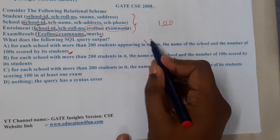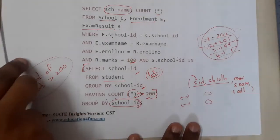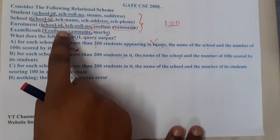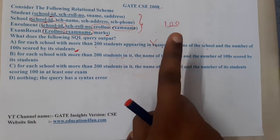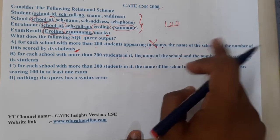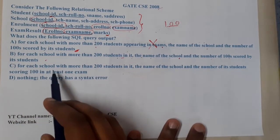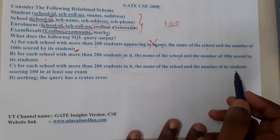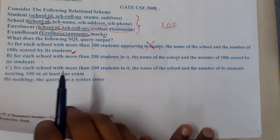Option A is wrong because in the inner query we are counting students from the student table, not from the exam or enrollment table, so we are not filtering by those appearing in an exam. Option B could be the correct answer. Option C says: for each school with more than 200 students in it, the name of the school and the number of students scoring 100 in at least one exam.